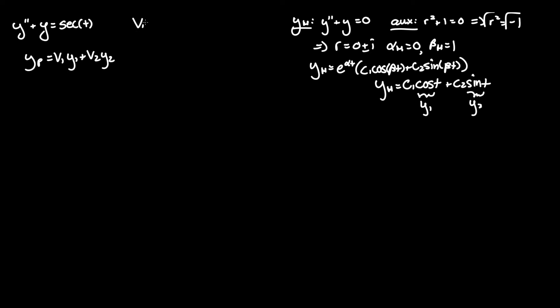Where v1 and v2 are going to be the following: v1 equals the negative integral of y2 f of t over Wronskian, where we take the right hand side to be f of t. We are going to use the Wronskian approach since it's much better than the system of equations in my opinion, and you have to just memorize this formula. We also know v2 equals positive integral of y1 times f of t over Wronskian.